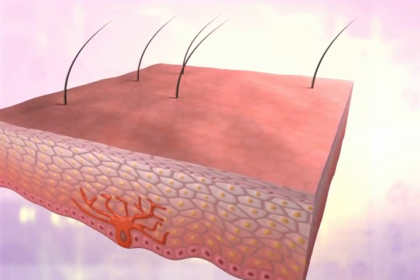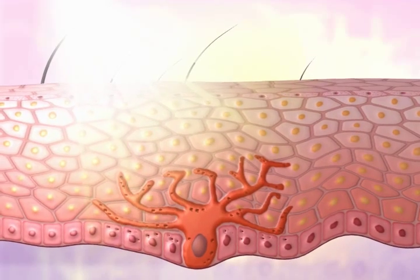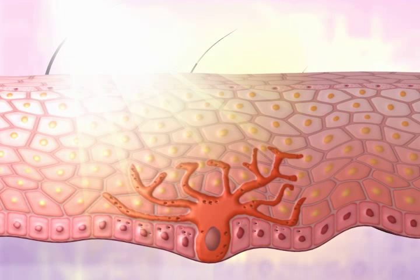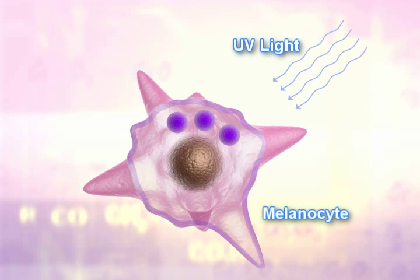Melanocytes reside in the basal layer of the epidermis and are responsible for synthesizing melanin, which under normal conditions helps to protect against UV damage. The enzyme tyrosinase is responsible for the production of melanin.